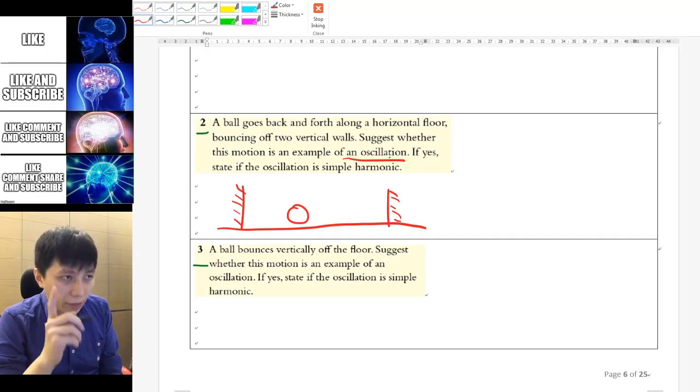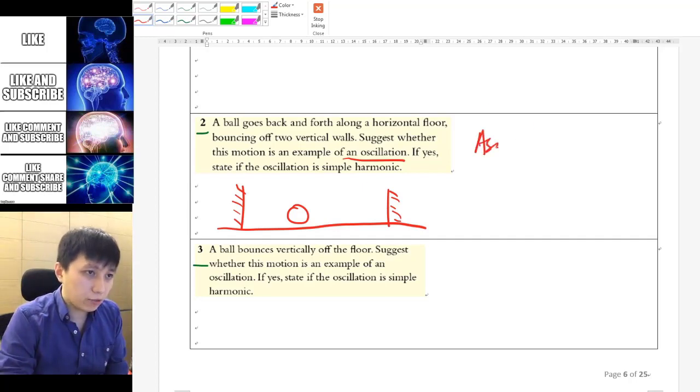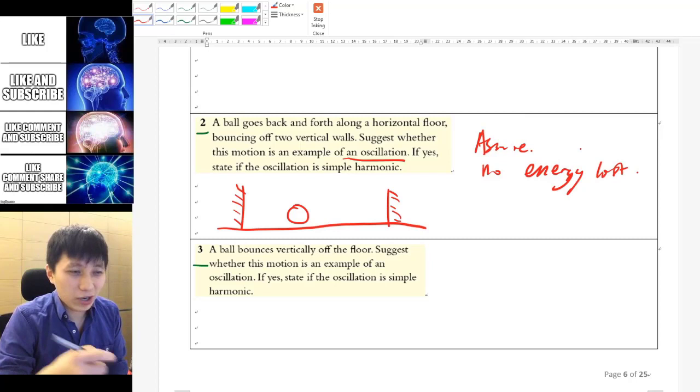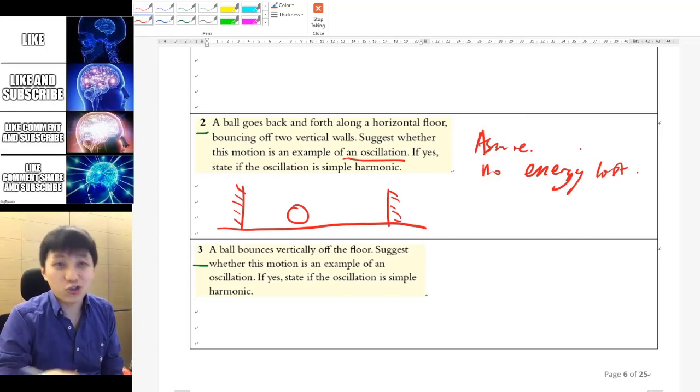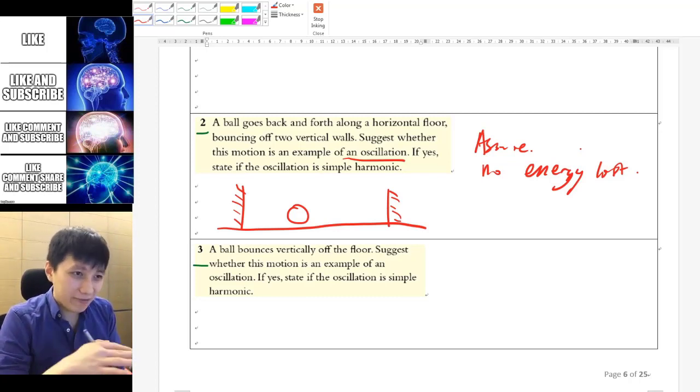I mean if one thing is we have an assumption that's no energy loss, which is not really possible because when you hit the wall there must be some sound so it should slow down. But let's just assume it doesn't, and then this is also 1D as well, then I guess it's possible.